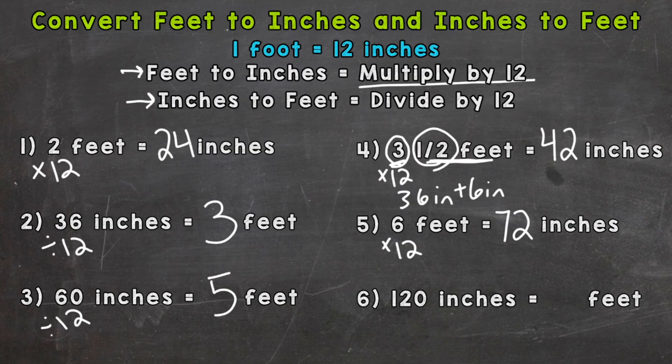And lastly number six. 120 inches equals how many feet? So we're taking 120 and dividing it into groups of 12. And again each one of those groups of 12 is a foot. So 120 divided by 12 is 10. So 120 inches equals 10 feet.